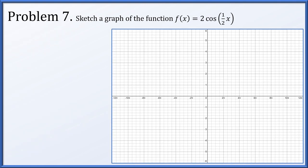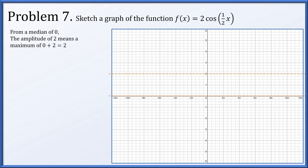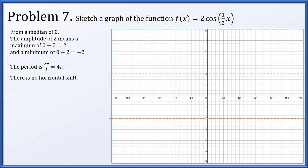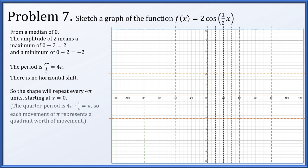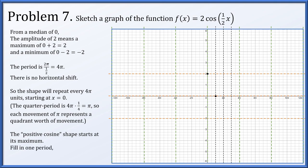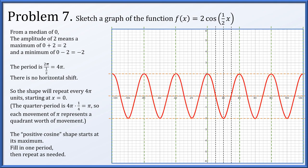In problem seven, let's sketch a graph of 2cos(½x). There is a median of zero, and we have an amplitude of two, so the maximum will be at two and the minimum at minus two. The period computes out to four pi. There's no horizontal shift, so we mark off guidelines representing full periods. The period is four pi, meaning a quarter period is pi, so we mark off segments of width pi. We have a positive cosine shape that starts at its maximum — so we fill in one period: head to the median, down to the minimum, back to the median, then back up to the maximum. The shape looks like this, and we repeat it as necessary to complete the diagram.